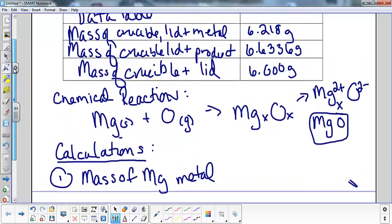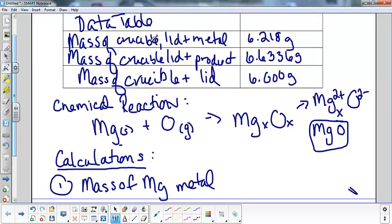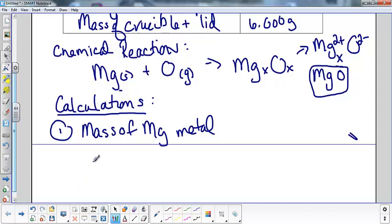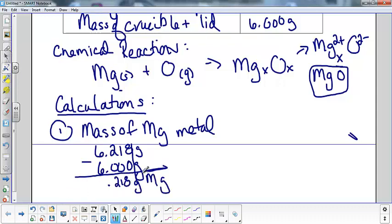To find the mass of the magnesium metal, we're going to take the mass of the crucible, the lid, and the metal, and we're going to subtract the mass of the crucible and the lid. If we subtract that out, what we should be left with is the actual mass of magnesium. I'm going to set this up old school so that we keep significant figures in mind. 6.628 grams minus 6.000 grams. With sig figs, we can only report the fewest number of decimal places, which is 3. So my answer is going to be 0.218 grams of magnesium. We want to go ahead and circle that.